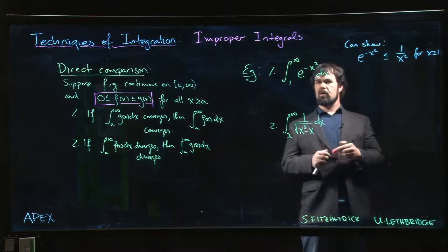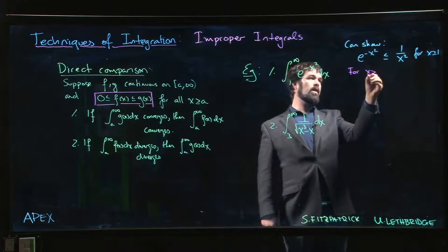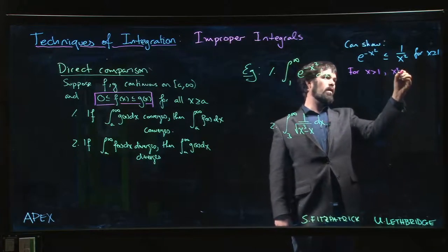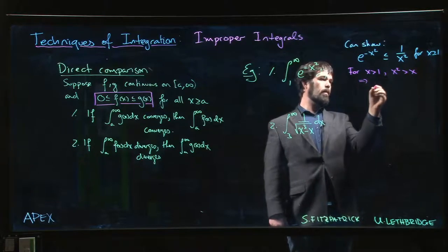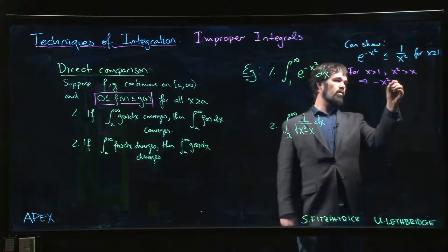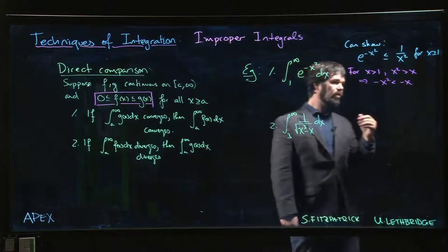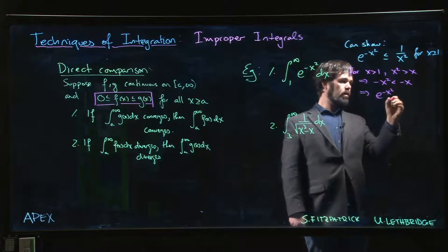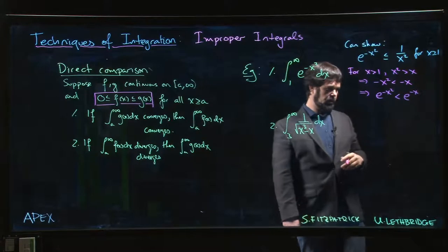Another comparison that we could make, we could say this. We could say for x bigger than 1, it's true that x squared will be bigger than x. So that means minus x squared is less than minus x. And since the exponential function is an increasing function, that means that e to the minus x squared will always be less than e to the minus x.